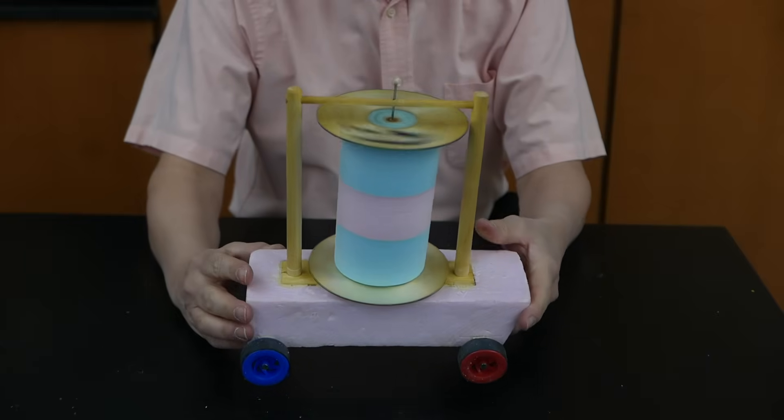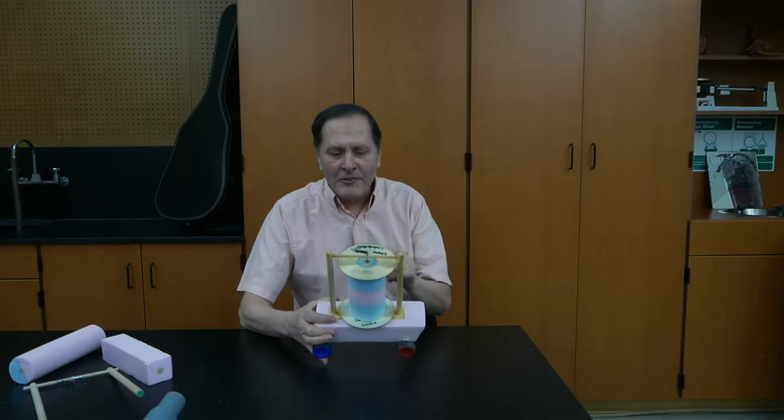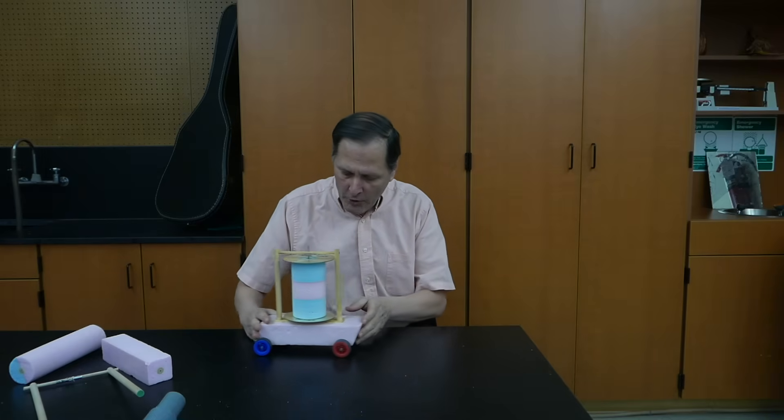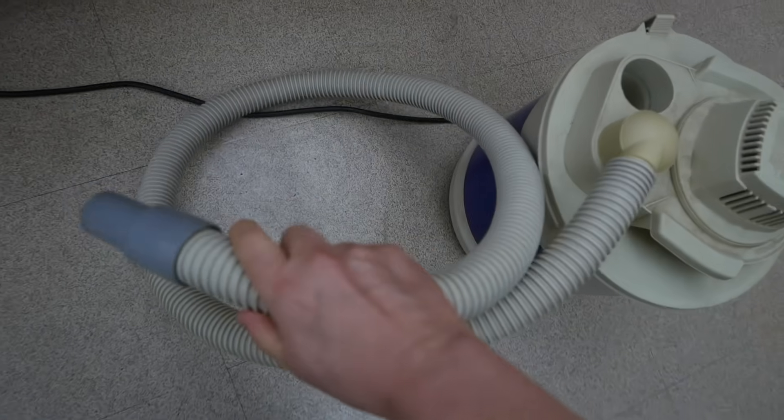The Flettner Rotor worked in air and in the sea, now let's try it on land. The spinning cylinder is going to use the Magnus effect to drive this cart forward, so let's take a quick look. My source of wind is going to be this shop-vac.